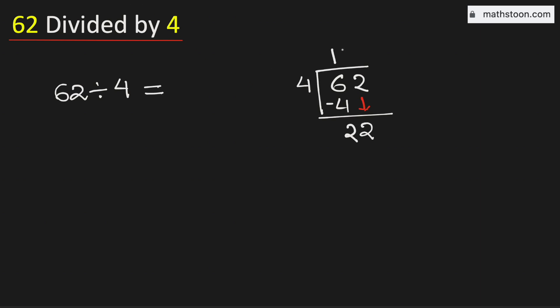Now 4 times 5 is 20. Subtract we get 2. Now see that 2 is less than 4 but we have no number to bring down here.